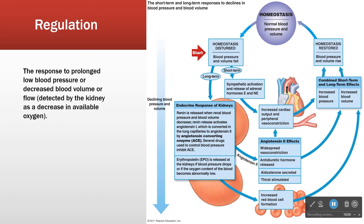The renin-angiotensin-aldosterone pathway is considered long-term control because it takes place over minutes to hours, while the short-term nervous system control operates on seconds to minutes. Endocrine systems make bigger effects but take longer. RAS is a long-term control.